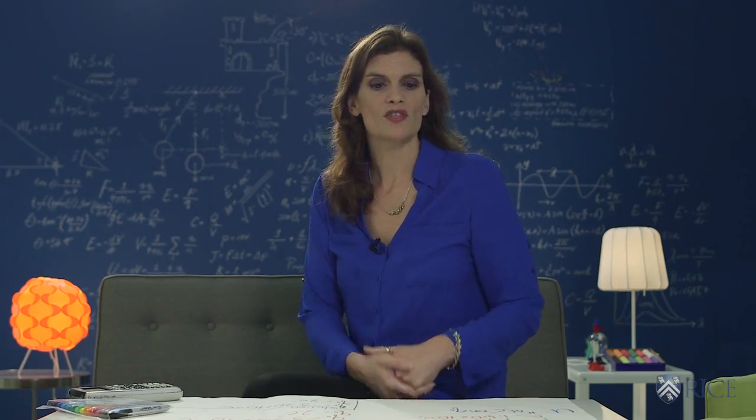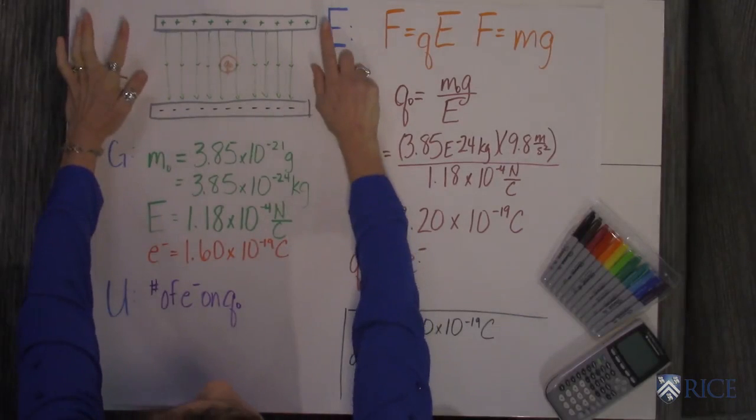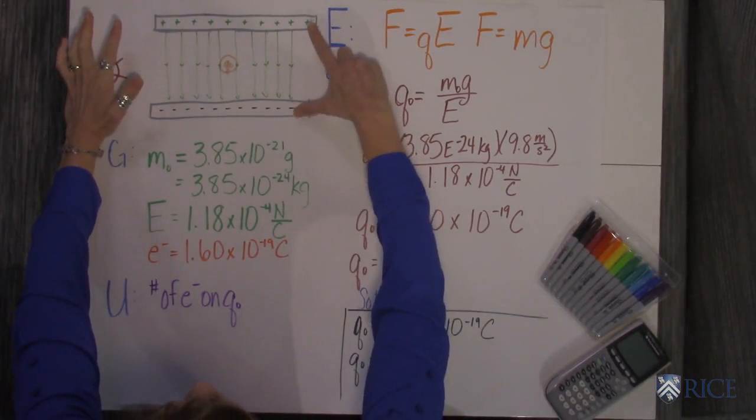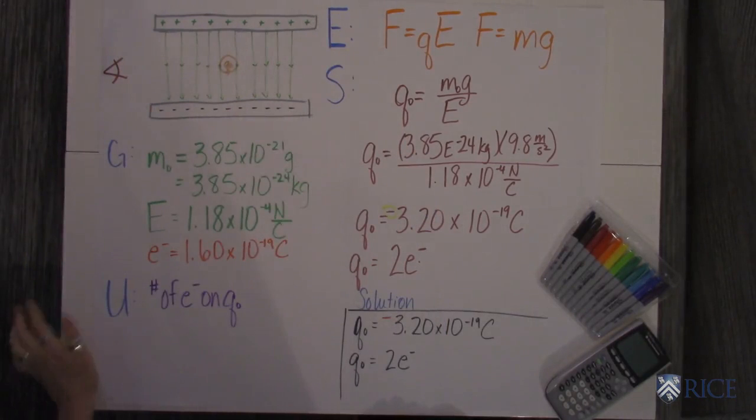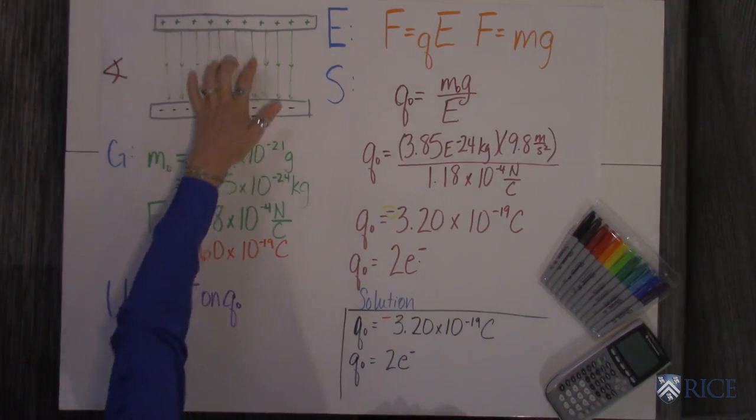In this problem you've got two uniformly charged plates that are oppositely charged. Please assume that there is a uniform electric field in here.